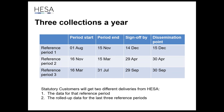Statutory customers will get two different deliveries from HESA: one for data referring to that specific reference period (roughly a three-month window), and then a rolled-up dataset covering the last three reference periods for a 12-month picture. For example, with a December dissemination point, you'd get data from 1st August to 15th November, plus data from the previous 15th November — so all statutory customers are working off the same dataset.